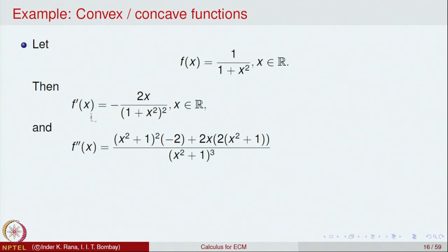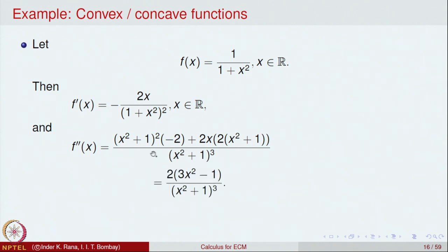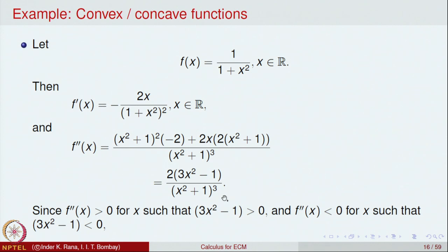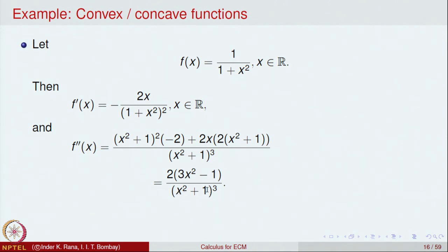We want to differentiate once again. Applying the quotient rule to f'(x) = -2x/(1 + x²)², the second derivative f''(x) simplifies — one power cancels — to give a form with (1 + x²)³ in the denominator. The numerator works out to involve 3x² - 1 after simplification, so f''(x) = 2(3x² - 1)/(1 + x²)³. You are strongly urged to verify this calculation using the quotient rule.